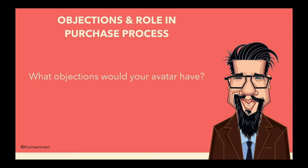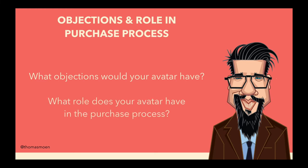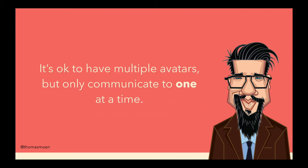Then I go into objections and what kind of role they have in the purchase process — what objections would they have for actually buying your product, what things would make them think it's not a good fit, and also: is this really the right person to talk to when making a purchase decision? Do they have to talk to somebody? Do they have to get a green light from their boss? All these things help us get a better picture when we're communicating. It's okay to have multiple avatars, but you should only communicate to one avatar at a time — the content or offer you're creating should be to one person, not many.